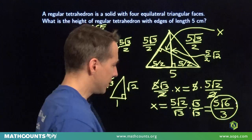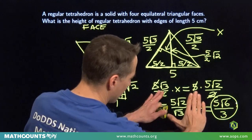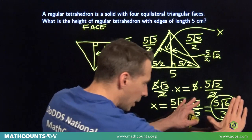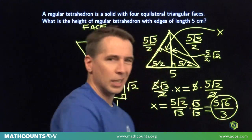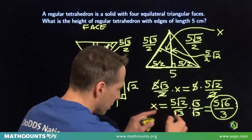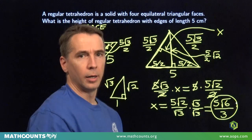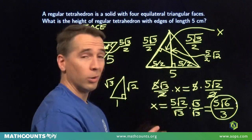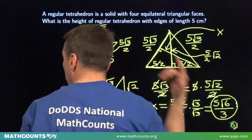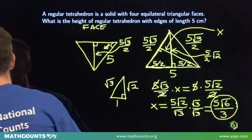Seriously, 5√2/√3 is a perfectly good number too, but we prefer denominators to be nice integers rather than having a square root in there. Now we're finished with this problem — ready for the next one.